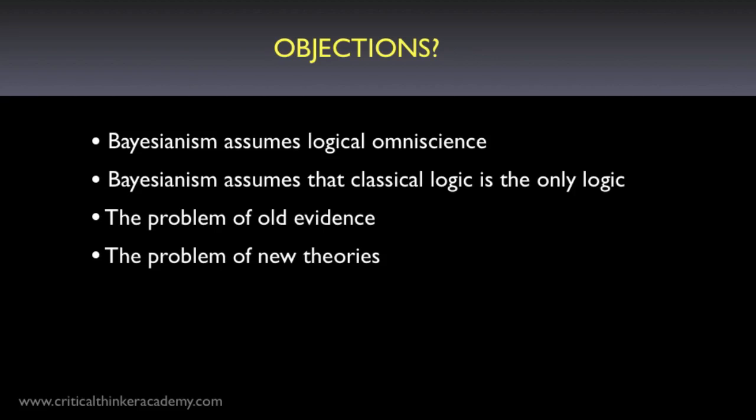Fourth objection: the problem of new theories. It seems intuitive that sometimes the invention of a new theory all by itself can influence our confidence in an old theory, especially when the old theory didn't have any rivals. So imagine the old Earth-centered cosmology of Ptolemy, where all the heavenly bodies move around a motionless Earth. This theory had no competition for a long time. Then along comes Copernicus with a Sun-centered cosmology that can explain everything that Ptolemy's theory did. Wouldn't this fact alone lead some people to reasonably reconsider their support for Ptolemy's theory? The objection to Bayesianism is that it's not clear how this kind of shift in support can be explained or justified in the Bayesian framework.